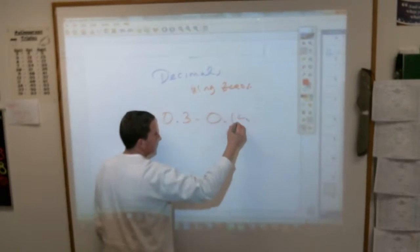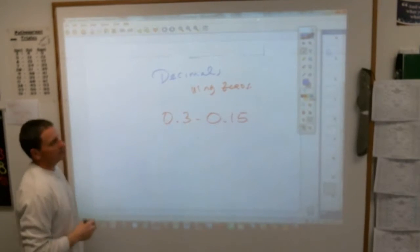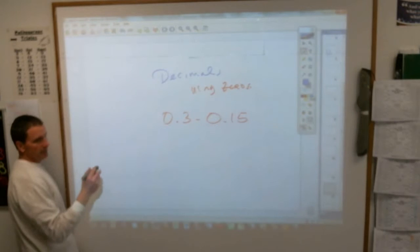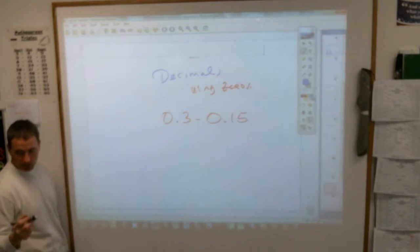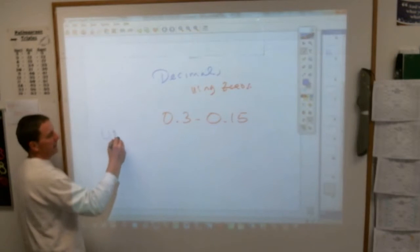Minus 0.15. The important thing to remember when you add and subtract decimals is what needs to happen. The phrase that pays with adding and subtracting decimals is that the decimals need to... yeah, they have to line up.